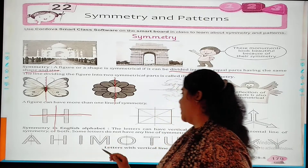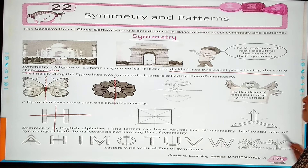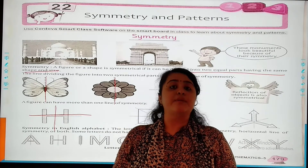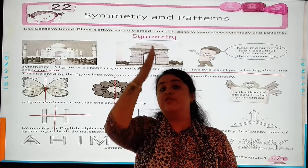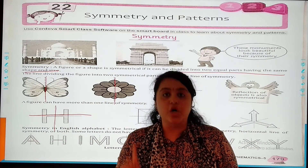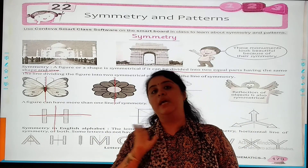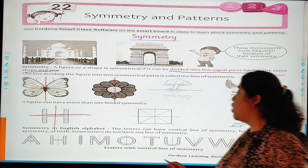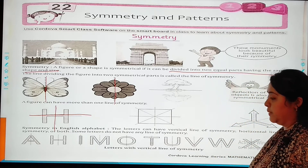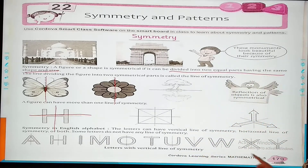Symmetries in English alphabet. The letters can have a vertical line of symmetry, a horizontal line of symmetry, or both. In English alphabet, there are many alphabets in which I can draw the line of symmetry. Some lines can be vertical, some lines can be horizontal, or in some figures both lines can be drawn. Some letters do not have any line of symmetry. Letters with a vertical line of symmetry include: A, H, I, M, O, T, U, V, W, X, Y.